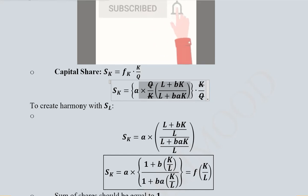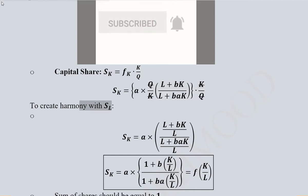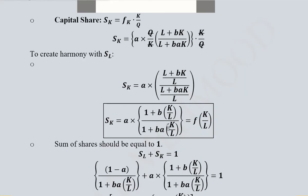Now we create harmony with the share of labor, because in that we had capital to labor ratio. For that, we simply introduce labor in both of these terms. Capital will appear as capital to labor ratio, and these labors will be cancelled out and it will become one.